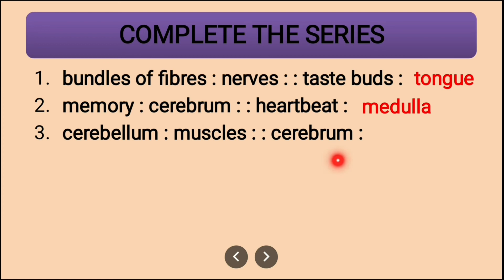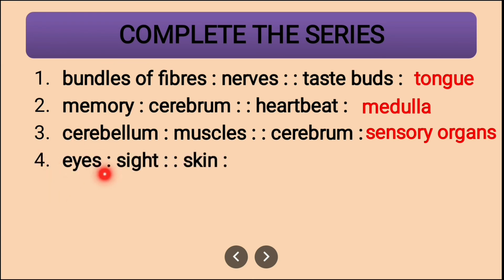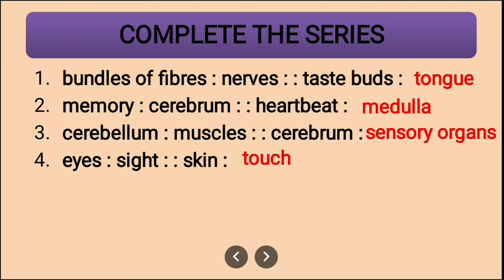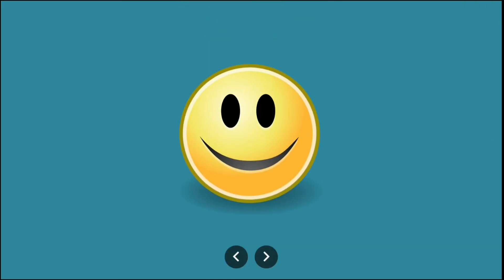Cerebrum gives orders to the muscles. Cerebrum also gives orders to sensory organs — write sensory organs or senses. Eyes give us the sense of sight. Skin gives us the sense of touch — touch is the correct answer.